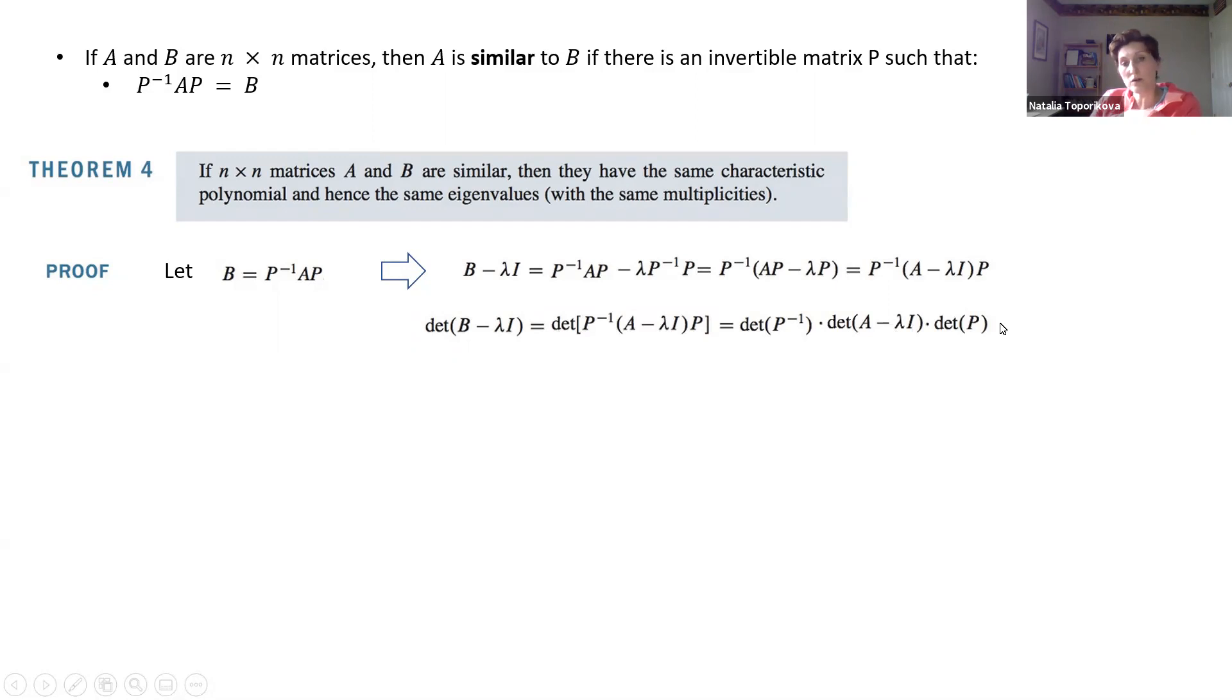We can write it down as determinant of inverse P times determinant A minus lambda I times determinant of P. And here it's very important to remember that determinants are just numbers, so they can be multiplied in any order. So there is no reason to not multiply these two determinants in red brackets and then the third one. So let's calculate this determinant. And again, you can use the rules of determinant to switch from product of two determinants to determinant of the product. And of course, inverse P times P will give us an identity matrix, which determinant is always equal one.